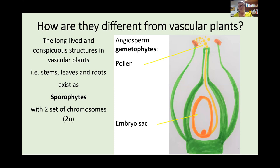The gametophyte generation in vascular plants is very small and minor — the only parts of the gametophyte in a plant are the pollen and the embryo sac. Everything else has two sets of chromosomes and is therefore part of the sporophyte generation. You don't really need to know this to identify bryophytes, but it is one of the main differences between the two types of plants.